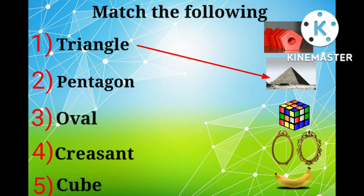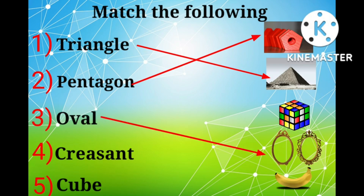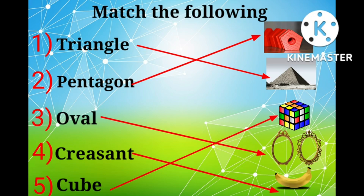Number one — triangle: match that with pyramid, because a pyramid has got the same shape as a triangle. Pentagon: match that with the puzzle, because it has got the pentagon shape. Oval: match that with the mirror, because it has the shape of an oval. Crescent: match that with banana, because a banana has the shape of a crescent. And the last one — cube: match that with the Rubik's cube, because they both have got the shape of a cube.